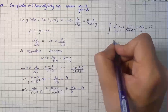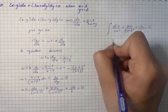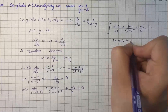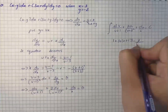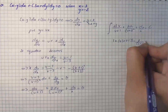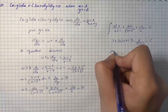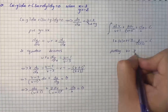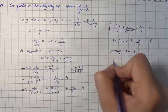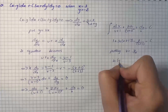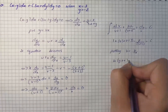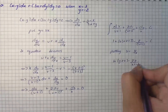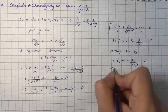On further simplification it becomes log of x times (v plus 1) minus 2 over (v plus 1) equals c. Now putting back v equals y/x, it becomes log of (y plus x) minus 2x over (x plus y) equals c.